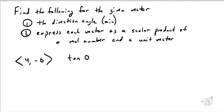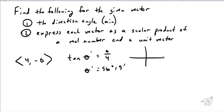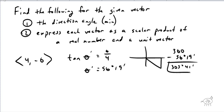First, the direction angle. Tangent of θ' equals 6 over 4, using the positive values. So θ' comes out to be 56 degrees 19 minutes. But since our vector is ⟨4, -6⟩, we're down in quadrant IV. So we do 360 minus 56°19', which gives us 303 degrees 41 minutes. That is our direction angle to the nearest minute.